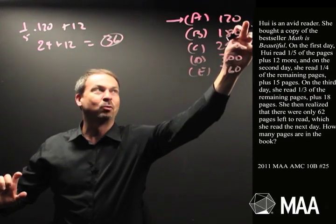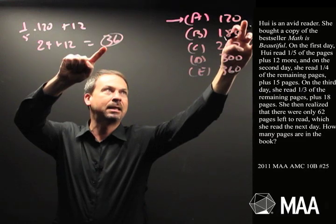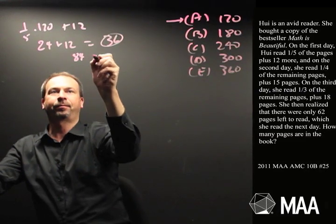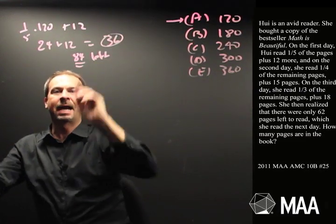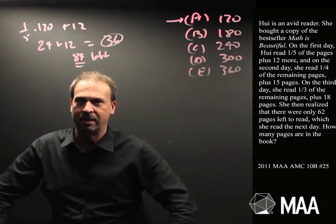In our assumption, 120 pages in all. So that means 120 take 36, that's 84 pages left. Alright. So she has 84 pages at the end of day one, 84 pages to read on day two.